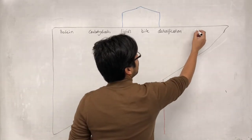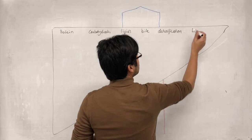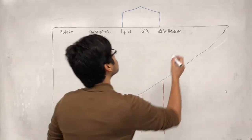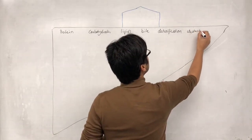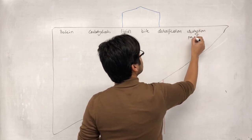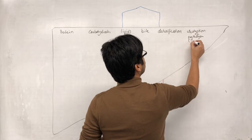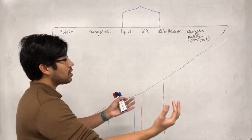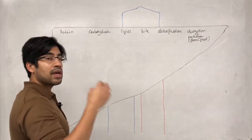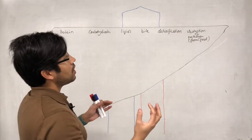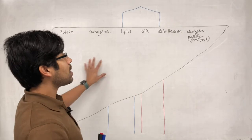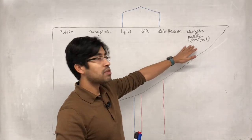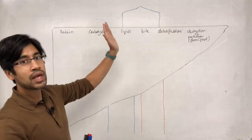We also have, finally, the destruction of pathogens from food. It's very likely that substances absorbed from the digestive process might have pathogens in them as well. And therefore, as that stuff arrives at the liver, one of the liver's jobs is to make sure that some of those pathogens are destroyed before the blood then goes to the rest of the body.